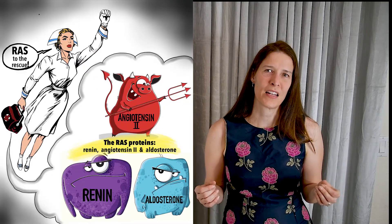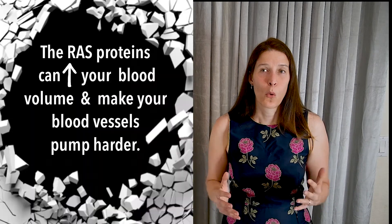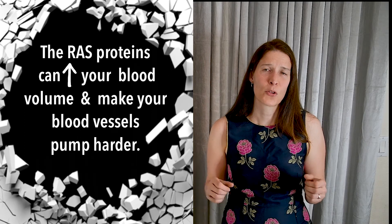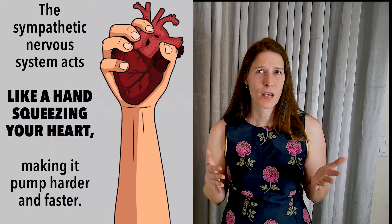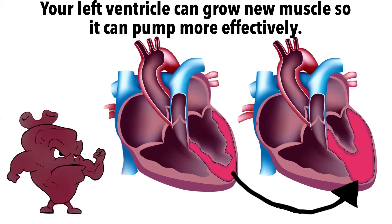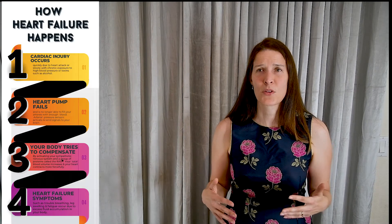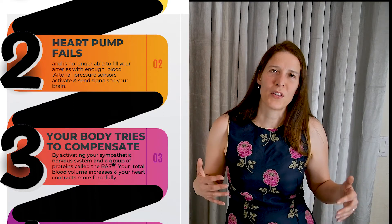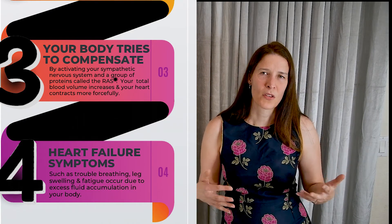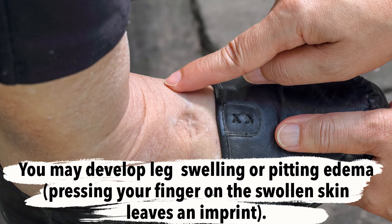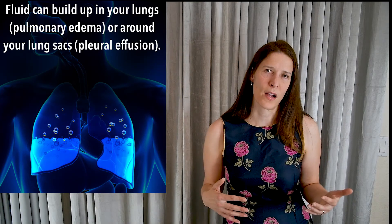The RAAS proteins can increase the total amount of blood in your arteries or squeeze your arteries harder to redirect blood to essential organs such as your brain. Your sympathetic nervous system can increase your heart rate and make your heart contract more forcefully. And you can grow more muscle in the wall of your left ventricle to make it pump blood more efficiently. Thus, you are usually able to increase your total cardiac output in the short term. Unfortunately, these mechanisms fail over time as your heart becomes overwhelmed by the increasing volume and pressure of blood coming into it from the rest of the body. That's when you start seeing classic signs and symptoms of heart failure, such as leg swelling and excess fluid around the lung sacs, which can make it hard to breathe.